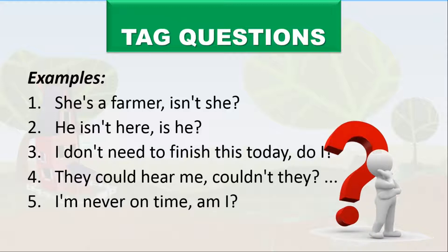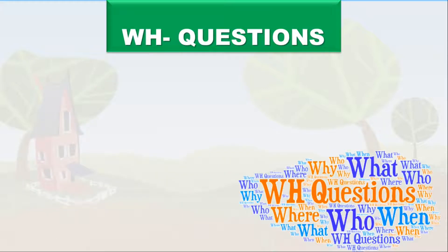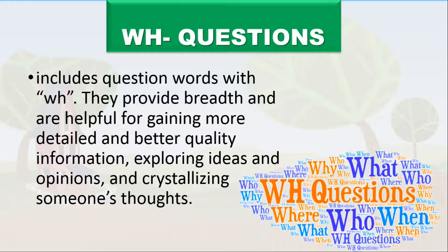The tag questions in those examples are: isn't she, is he, do I, couldn't they, and am I. Next are WH questions — we are all familiar with these. Examples include why, what, who, where, and when. These question words start with 'wh' and provide breadth, helping to gain more detail and better quality information, explore ideas and opinions, and crystallize someone's thoughts.